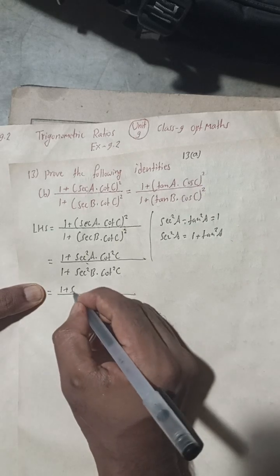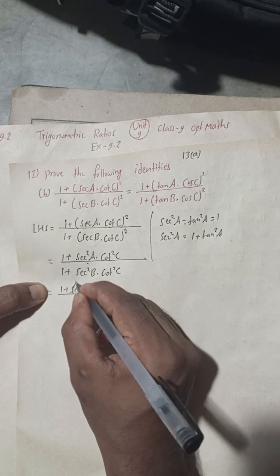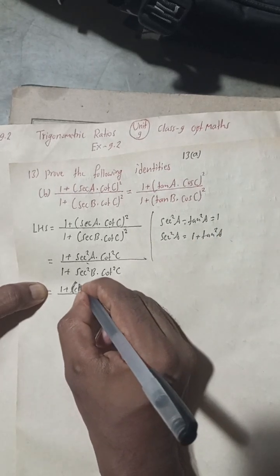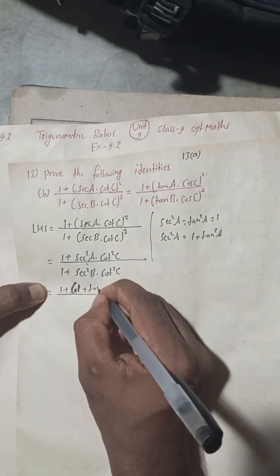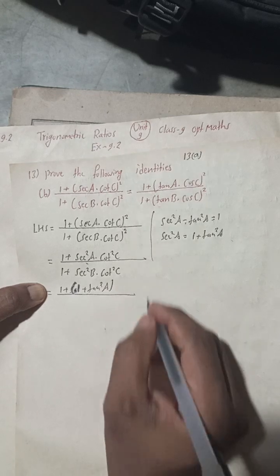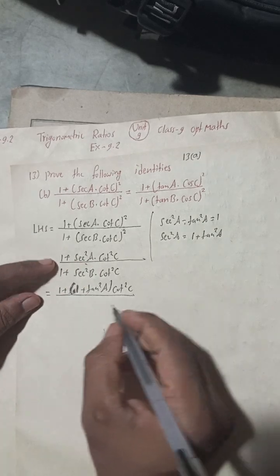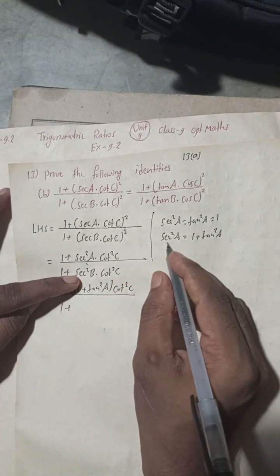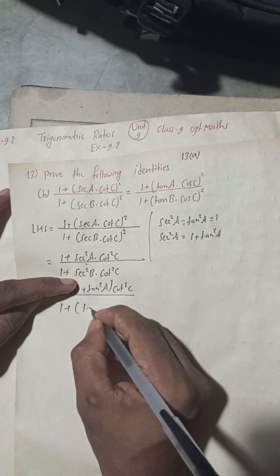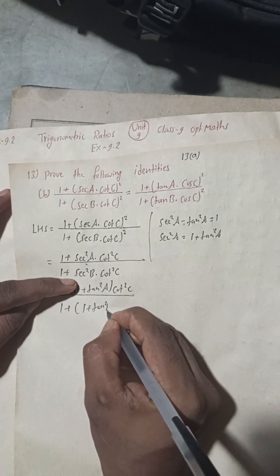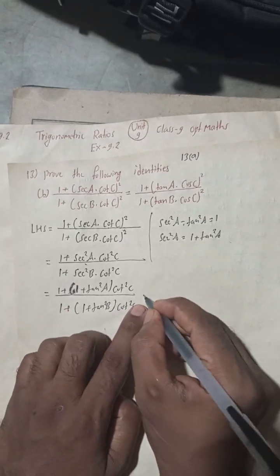So the numerator becomes 1 + (1 + tan²A) · cot²C, and the denominator becomes 1 + (1 + tan²B) · cot²C, substituting sec²B = 1 + tan²B.